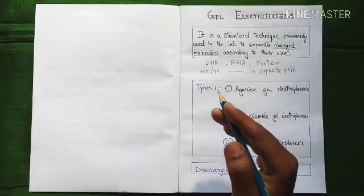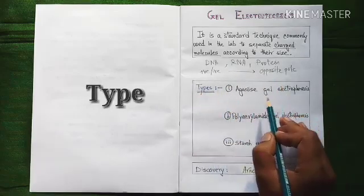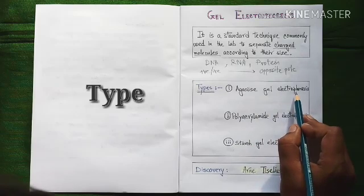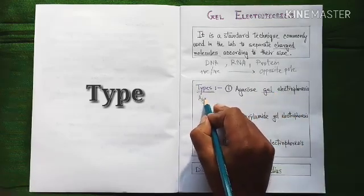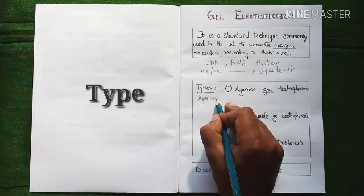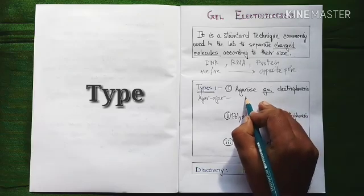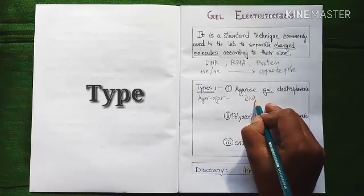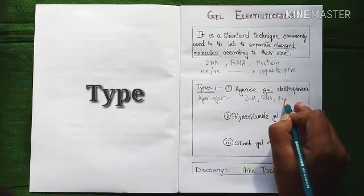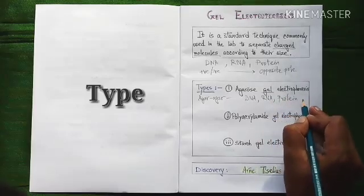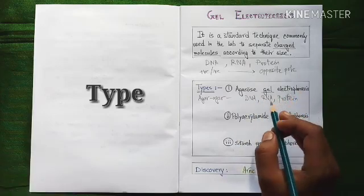Now let us know about the types of gel electrophoresis. Generally gel electrophoresis are of three types. Agarose gel electrophoresis, where the gel is prepared by agar agar, a polysaccharide extracted from algae, and this type of gel electrophoresis generally perform for DNA, RNA, protein.